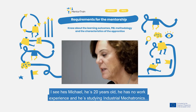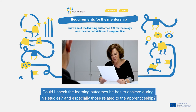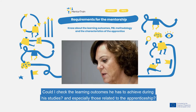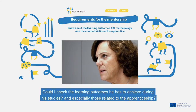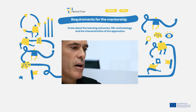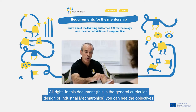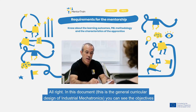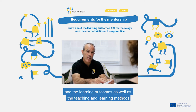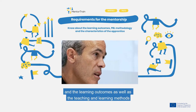I see his name is Michael, he's 20 years old, he has no work experience, and he's studying industrial mechatronics. Could I check the learning outcomes he has to achieve during his studies, especially those related to the apprenticeship? In this document — this is the general curricular design of industrial mechatronics — you can see the objectives, the learning outcomes, as well as the teaching and learning methods.